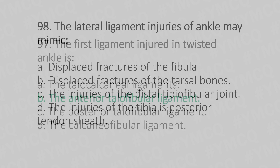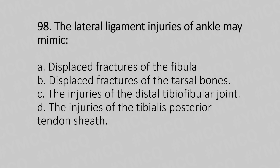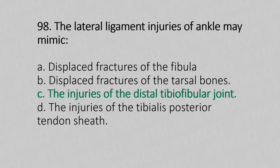Let's move to question number 98. The lateral ligament injuries of the ankle may mimic: Option A, displaced fracture of the fibula. Option B, displaced fracture of the tarsal bones. Option C, the injury of the distal tibiofibular joint. Option D, the injuries of the tibialis posterior tendon sheath. The answer is Option C, the injury of the distal tibiofibular joint.